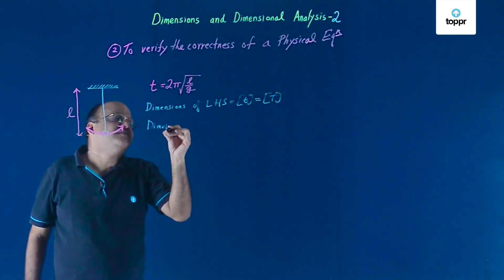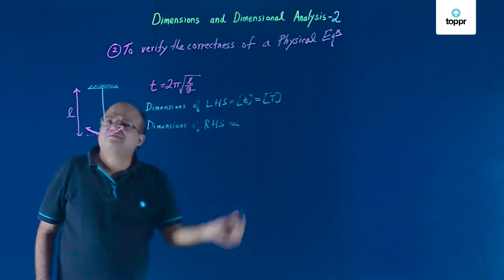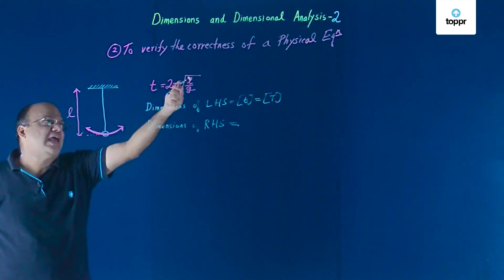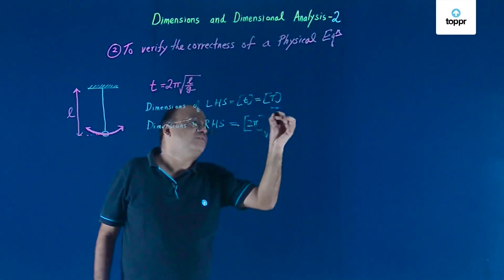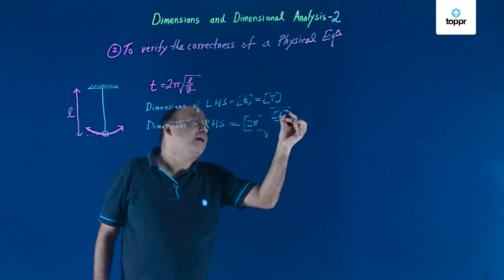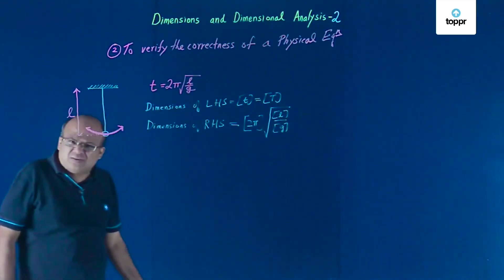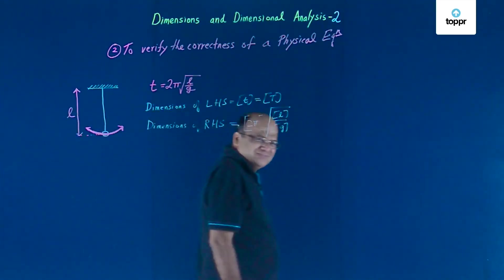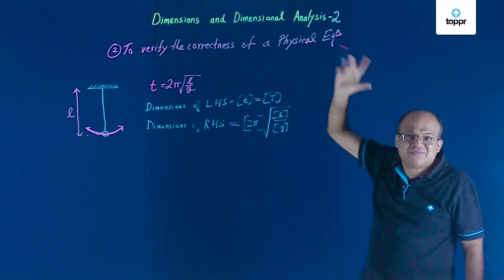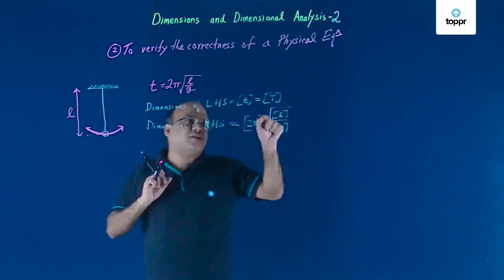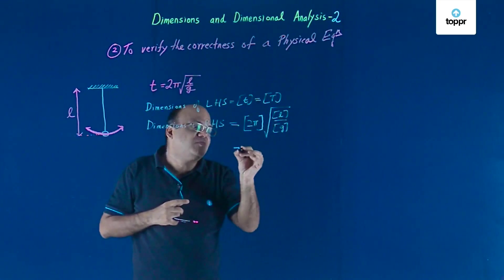Now, the dimensions of the right hand side. On the right hand side we have 2π, L, G, and a square root. So this will be the dimension of 2π times the square root of the dimension of L by the dimension of G. Now, 2 is a dimensionless constant and π is also a dimensionless constant — π is circumference by diameter. So 2π does not have any dimensions; we do not need to worry about it.